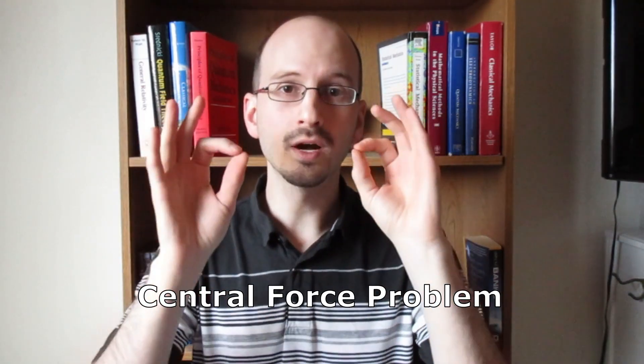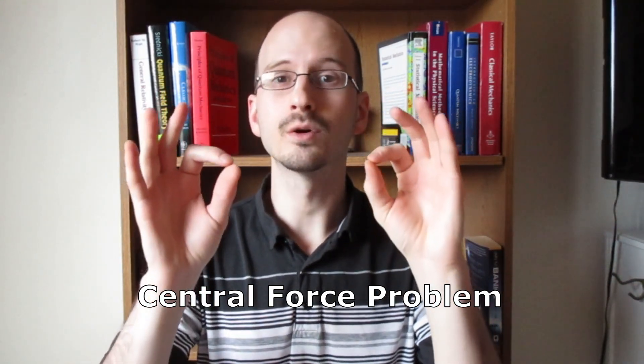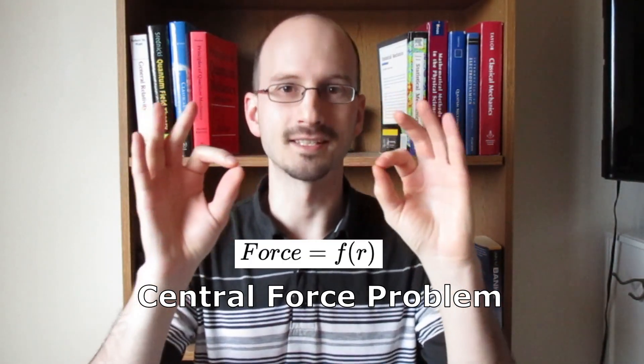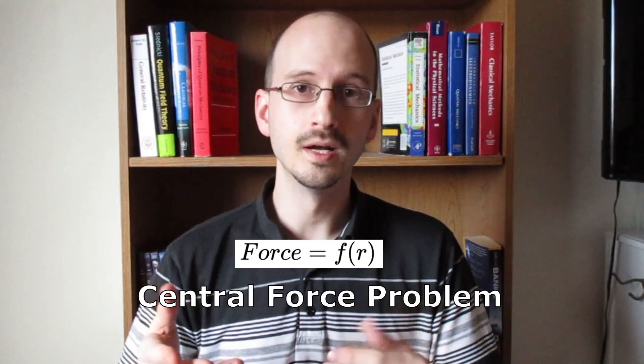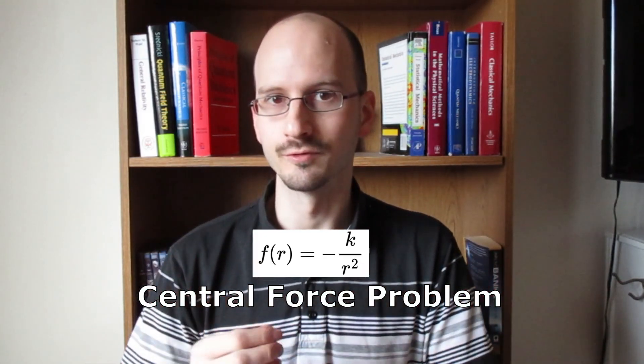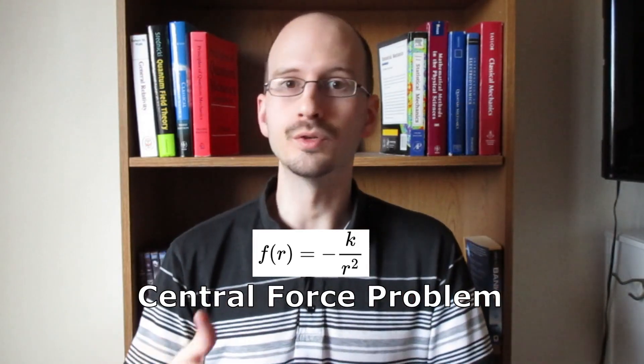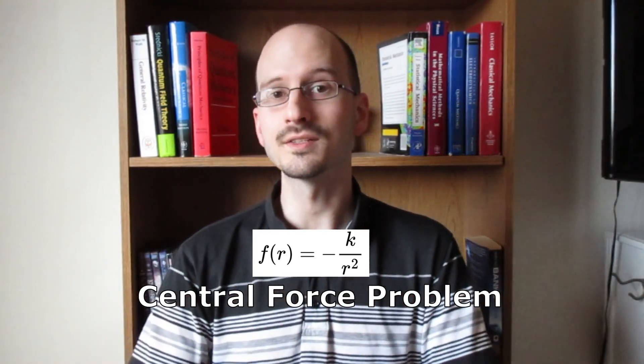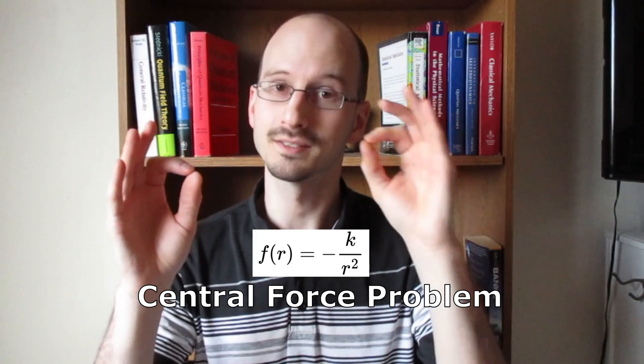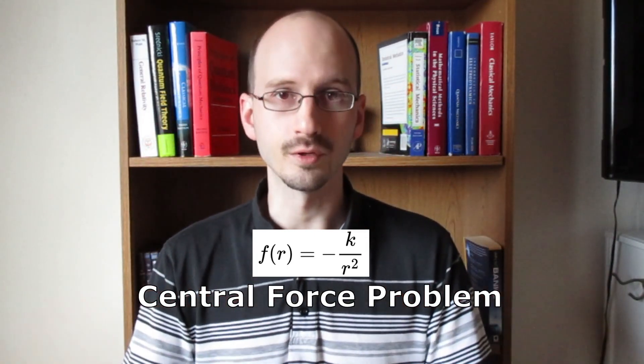A central force is when two objects exert an attractive or repulsive force on one another that only depends on their distance. We're going to start general and then we're going to look specifically at 1 over r squared forces. This is applicable to the universe we experience because gravity between two objects like the earth and the moon and the electric force between two charged objects like a proton and electron are both 1 over r squared forces.